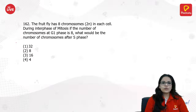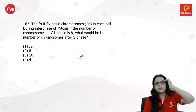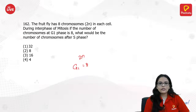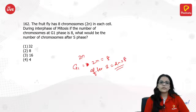The fruit has eight chromosomes (2n). During interphase of mitosis, if the number of chromosomes at G1 phase is 8 when 2n = 8, the number of chromosomes after S-phase would always still be 2n — the answer is 8, because chromosome number doesn't change, only DNA content doubles.